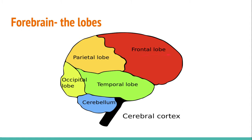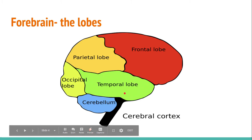The frontal lobe, indicated by the red, covers both hemispheres and is responsible for reasoning, planning, language, movement, emotions, and problem solving. The parietal lobe is in charge of orientation, movement like walking, recognition such as remembering people from long ago, and perception of stimuli. The occipital lobe, indicated by the lighter green, is associated with visual processing — seeing things around you and understanding them. Finally, the temporal lobe is associated with perception and recognition of auditory stimuli, and is also responsible for memory and speech.